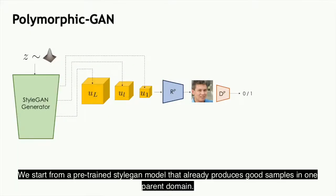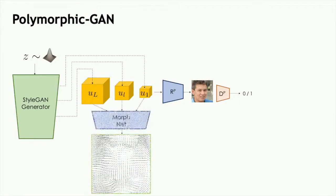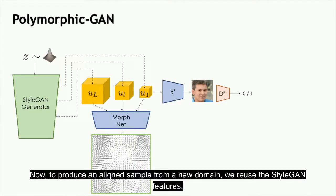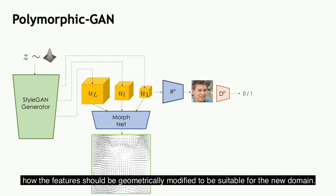We start from a pre-trained StyleGAN model that already produces good samples in one parent domain. StyleGAN generates features at multiple resolutions, denoted as U here, and these features go through some convolution layers to produce the output. To produce an aligned sample from a new domain, we reuse the StyleGAN features and train MorphNet, which produces a 2D offset map that specifies how the features should be geometrically modified to be suitable for the new domain.